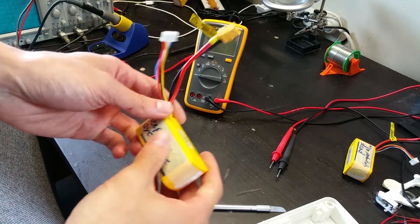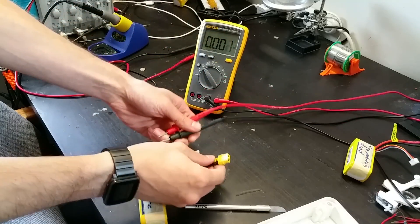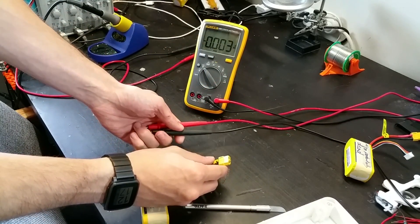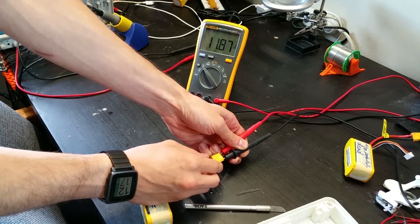Another one of my lipo packs died on me the other day. If you look at this, this is normally a 4S pack which should be reading somewhere between 14 and 16.8 volts. If I stick the multimeter on here, we're getting 11.8.